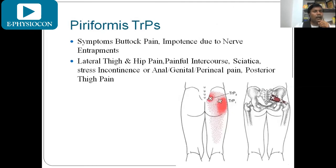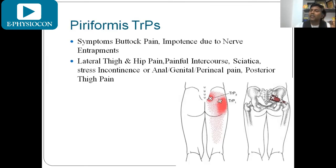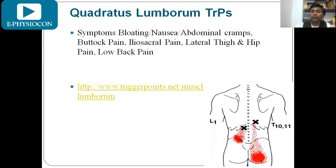When piriformis trigger points are present, patients feel buttock pain due to nerve entrapment, lateral thigh and hip pain, pain during intercourse, sciatic symptoms, stress incontinence, and posterior thigh pain. For quadratus lumborum trigger points, patients complain of abdominal cramps, buttock pain, iliosacral pain, lateral thigh and hip pain, and low back pain. Treating these trigger points in gluteus medius, maximus, piriformis, and quadratus lumborum helps patients recover from sciatica-like symptoms.